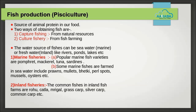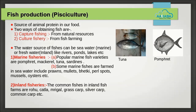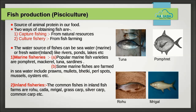Fish production (Pisciculture): fishes are an important aquatic food and a source of animal protein. Fish are highly nutritious and easily digestible. Fish liver oil is rich in vitamins A and D. Two ways of obtaining fish are: 1. Capture fishing from natural resources, and 2. Culture fishery from fish farming. Marine fisheries — India has an extensive coastline and exclusive sea zone. Popular marine fishes are pomfret, mackerel, tuna, sardines, and Bombay duck, caught using fishing nets from boats and large trawlers.